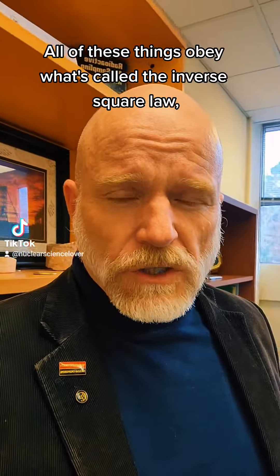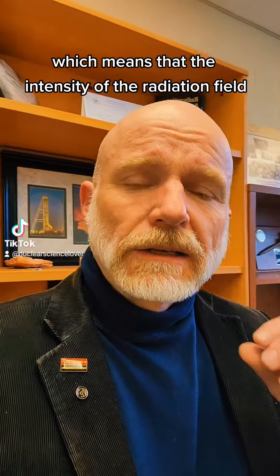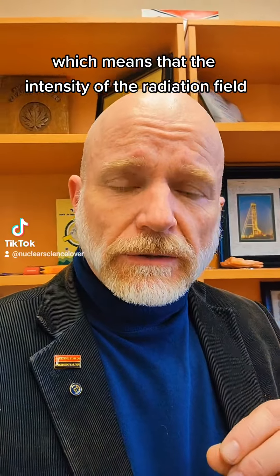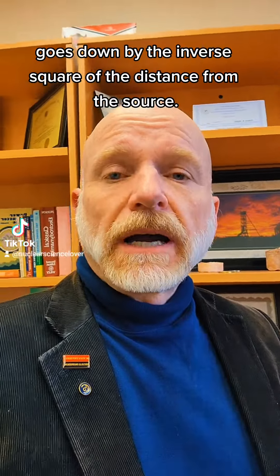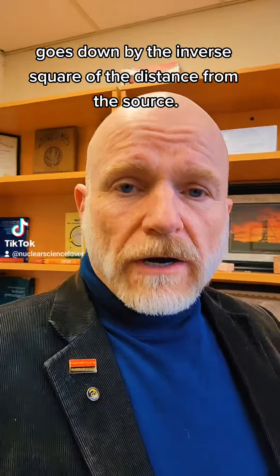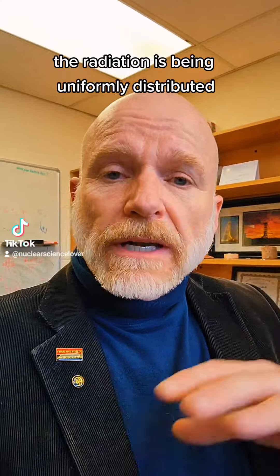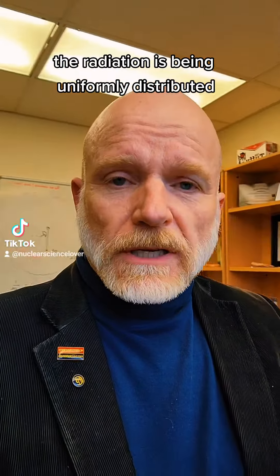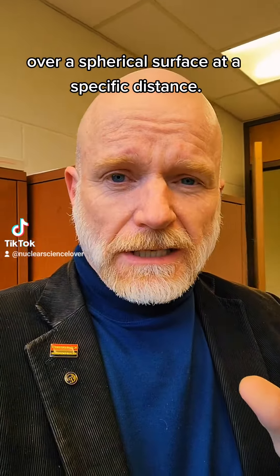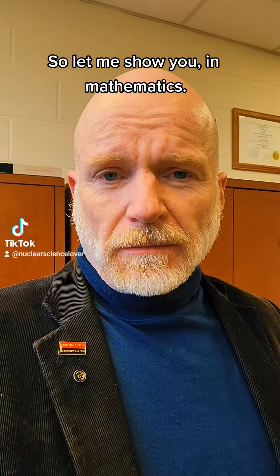All of these things obey what's called the inverse square law, which means that the intensity of the radiation field goes down by the inverse square of the distance from the source. And that really just comes down to the radiation being uniformly distributed over a spherical surface at a specific distance. So let me show you in mathematics.